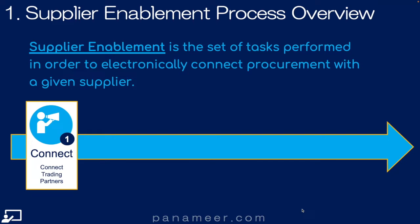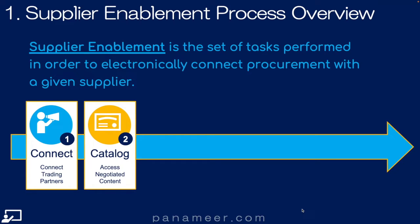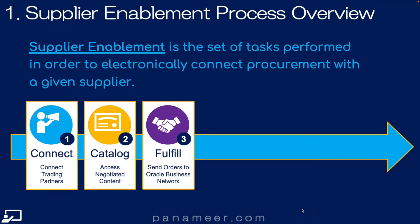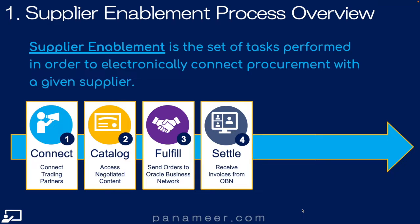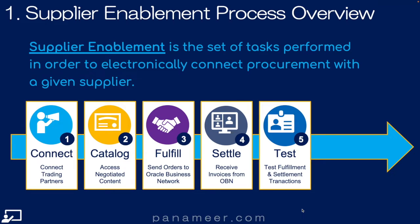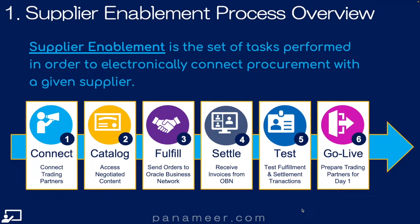Step 1 is Connect — this is where we connect the trading partners to OBN. Step 2 is Catalog — where we set up Oracle Cloud so it can access pre-negotiated content. Step 3 is Fulfill — where we set up Oracle Cloud to send orders to OBN. Step 4 is Settle — where we set up Oracle Cloud so it can receive invoices from OBN. Step 5 is Test — where we test all the different variations of fulfill and settle transactions. Step 6 is Go Live — where we prepare the organization and the trading partner for the different states of all the different types of data. For example, to receive an invoice back from OBN, the PO had to go through OBN, so everyone needs to understand what goes through OBN and what does not.